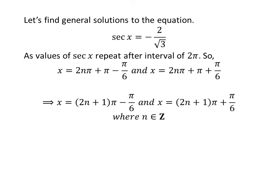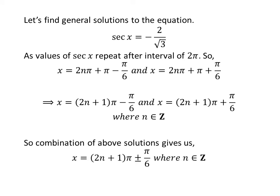Simplification gives us the general solutions as 2 times n plus 1 times pi minus pi upon 6, and 2 times n plus 1 times pi plus pi upon 6. Combining these, the general solution of the equation is 2 times n plus 1 times pi plus or minus pi upon 6, where n is an integer.